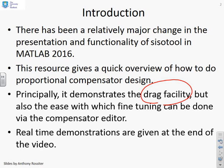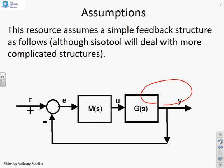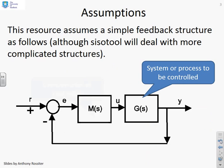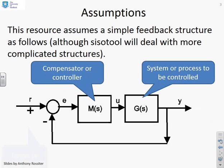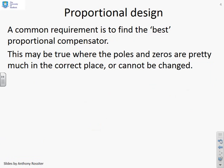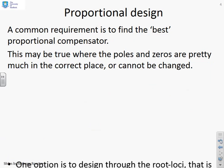Real-time demonstrations are given during the video to reinforce the messages. We're going to take a simple feedback loop with a process to be controlled, a compensator, reference R, input U, and output Y. The key assumption in this video is that this compensator is a constant C — a proportional design. A common requirement is to find the best proportional compensator, which might be true where the poles and zeros are pretty much in the correct place or cannot be changed.